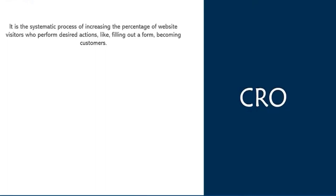For example, let's say you're purchasing a product online. You first perform certain actions on the web page, then ask for suggestions from friends or relatives, and finally when you want to buy the product, you have your own set of queries and you call customer care for assistance. When you finally decide to buy the product online, this entire process is called conversion rate optimization.